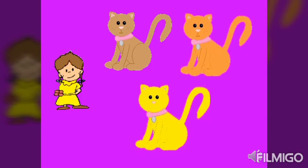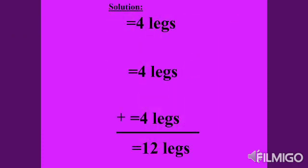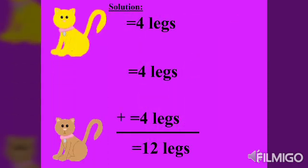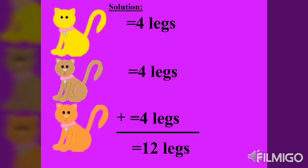These are the 3 cats of Ami. This slide shows the solution. The first cat has 4 legs, the second one has also 4 legs, and the third cat has also 4 legs. If we are going to add them mentally, so 4 plus 4 plus 4 equals 12 legs.